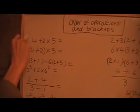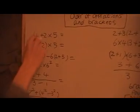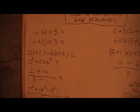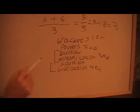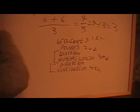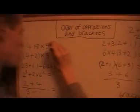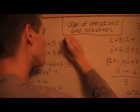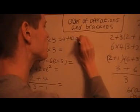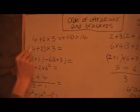Here I've got 4 plus 2 times 5. Now using order of operations, we'll do multiplication first. So I'm going to do 2 times 5 first. So that's 4 plus 10, which is 14.